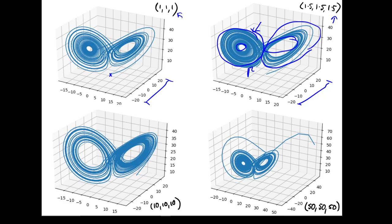With the starting point at 10, 10, 10 — now on a larger scale — we get more time spent on one side than the other, with the same two wings but a different distribution of how long you spend around each. And starting even further out, the first thing it does is cycle inward, then you still have these two wings but with different behavior and more time spent on one side. So you get similar macro-scale behavior — two wings, point circling each — but on the micro scale, the precise location is radically different.